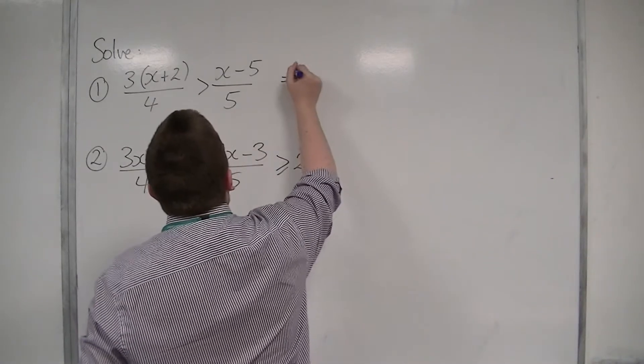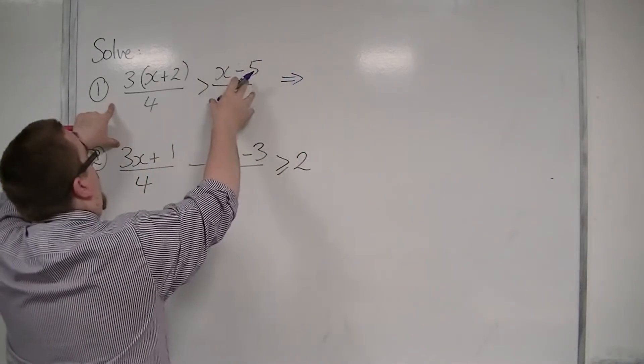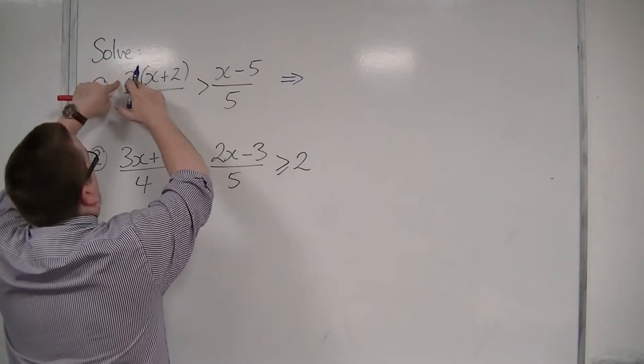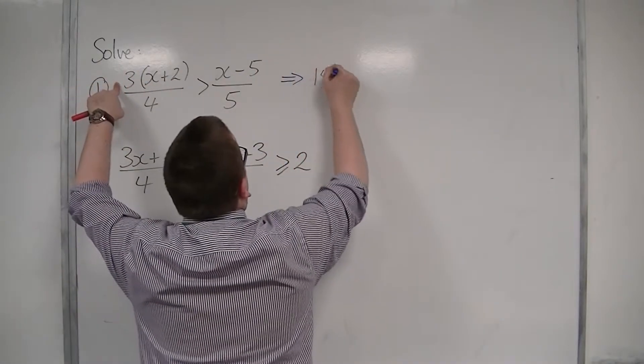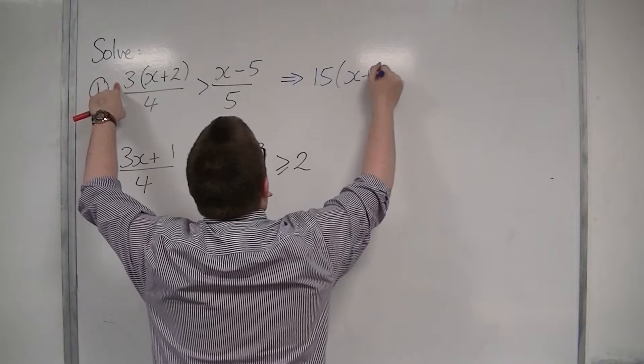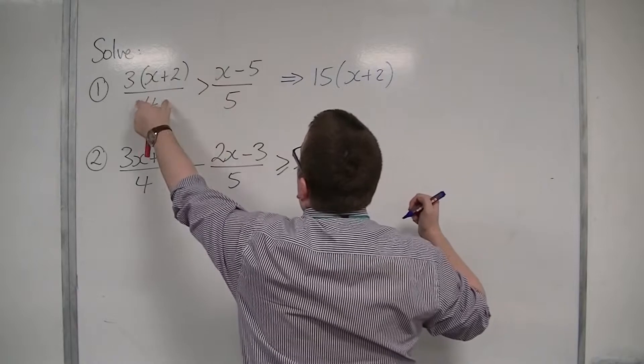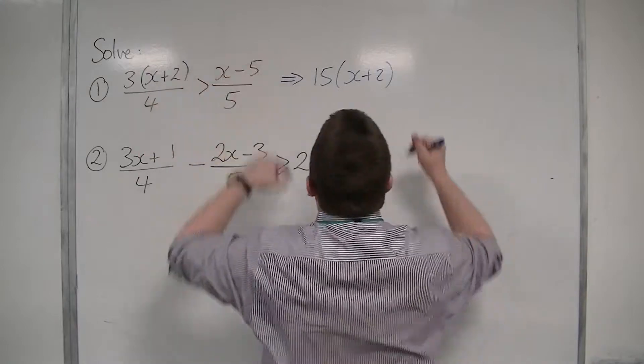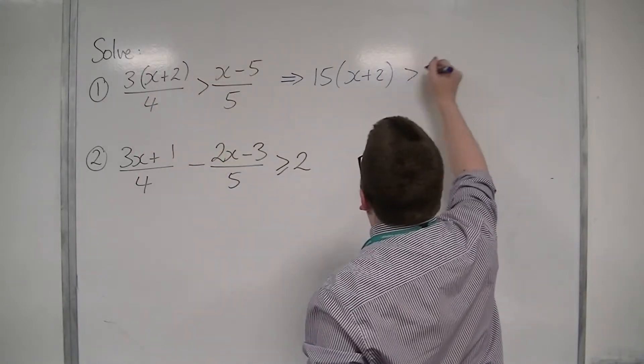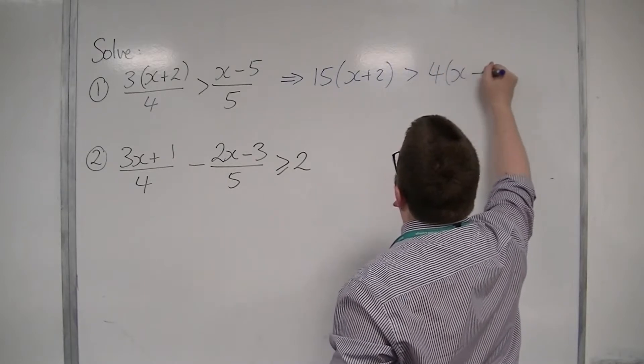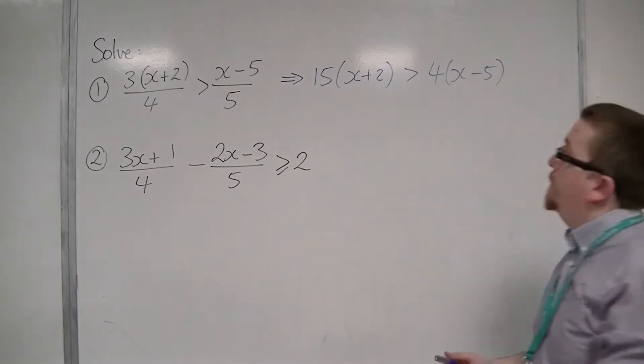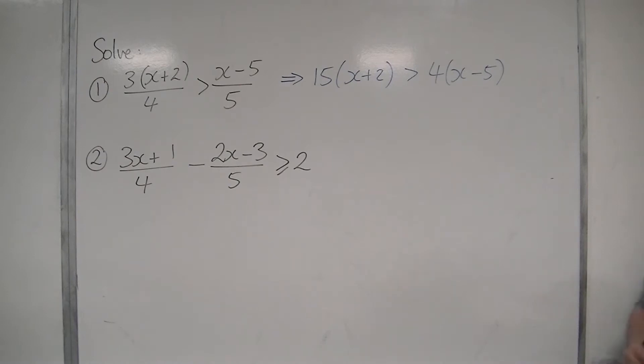So if I multiply both sides by 5, the 5 goes from that side, and I'm going to have three lots of 5, so 15 lots of x plus 2. And I'm going to multiply both sides by 4, so that 4 goes, and I'm going to multiply this by 4. So that's greater than 4 lots of x minus 5. OK? So multiply both sides by 5 and both sides by 4.